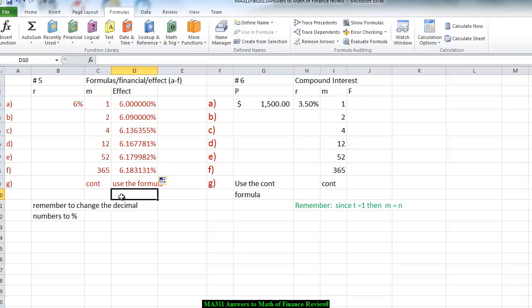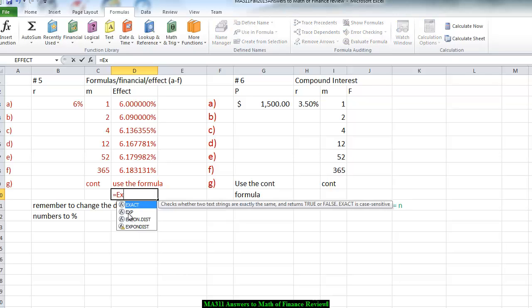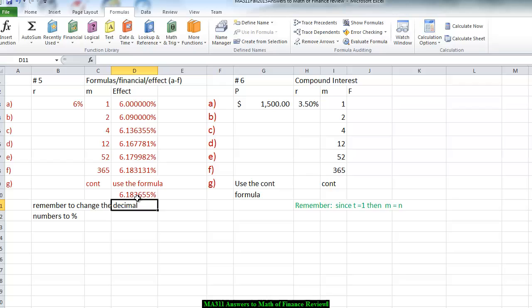Now, in order to use continuously, we use the formula. Remember on your formula sheet, continuously says that we take the E, which on our computer, we're going to write EXP, which is the exponent button, of the 6% minus 1, and that will give us a little bit more than if we calculated it daily.